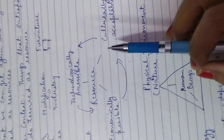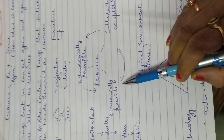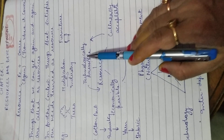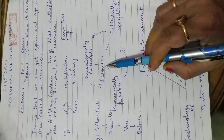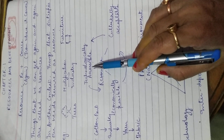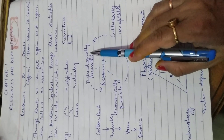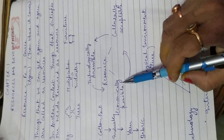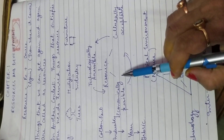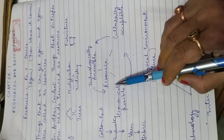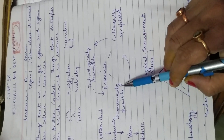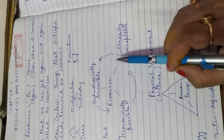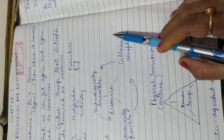The three terms are: technologically accessible, economically feasible, and culturally acceptable. Technologically accessible means the resource we are taking out from the mine should require easy technology. Economically feasible means the cost required for extracting minerals or anything from the land should be low, and the manufactured product should also require less cost. Culturally acceptable means whatever we have made should be accepted by all people, whether belonging to the lower class or the upper class.